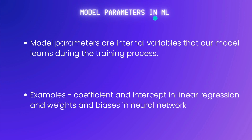Now, let's see what are model parameters in ML. Model parameters are like internal variables that our model learns during the training process. Unlike hyperparameters, which we set beforehand, these are fine-tuned based on the patterns in the training data. Think of model parameters as knobs and switches that our algorithm adjusts to make accurate predictions. In a linear regression model, the coefficient and intercept are examples of model parameters. In a neural network, the weights and biases of each neuron are the model parameters.